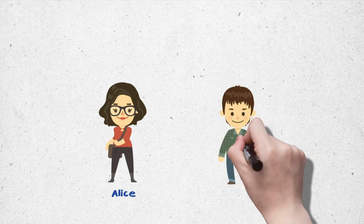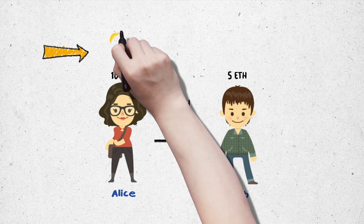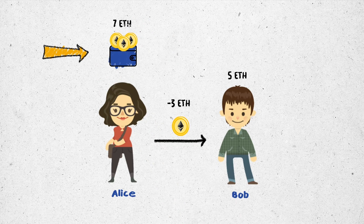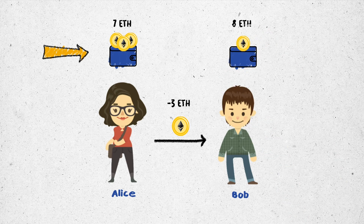Imagine Alice has 10 ETH and wants to send 3 ETH to Bob. First, the system will deduct 3 ETH from Alice's account — 7 ETH left. Then the system will add 3 ETH to Bob's account. Adding to his available balance of 5 ETH, the total balance in Bob's account becomes 8 ETH.